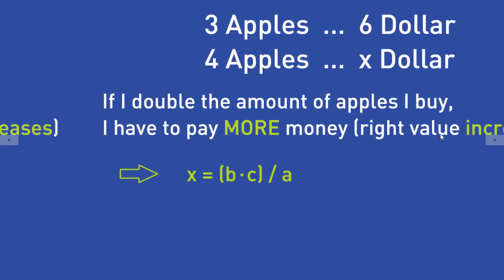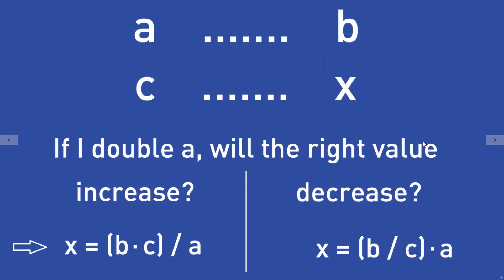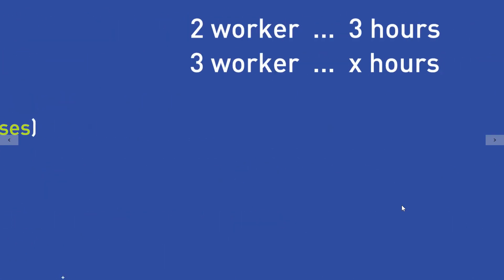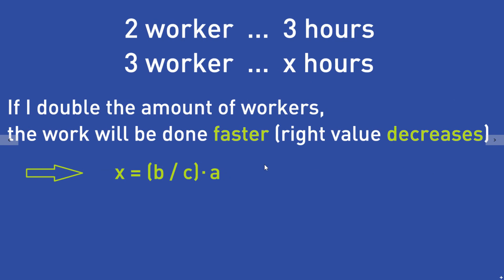Therefore we use this formula. The formula to calculate X is the decrease case, which means the right value decreases — so the more workers we have, the faster the work will be done — and the formula is X = (B / C) × A.